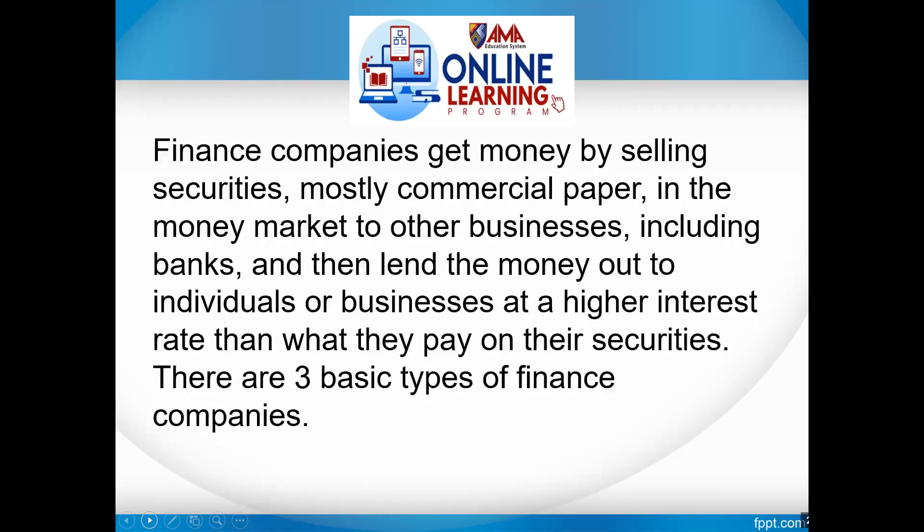Finance companies get money by selling securities — mostly commercial paper — and then lend that money out to individuals or businesses at a higher interest rate than what they pay on their securities. There are three basic types of finance companies.